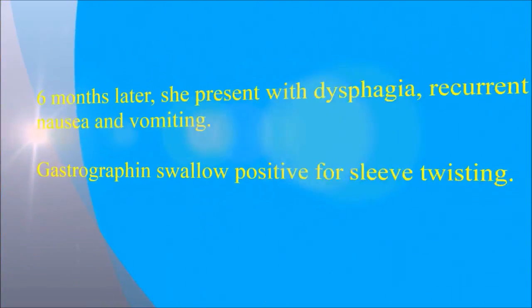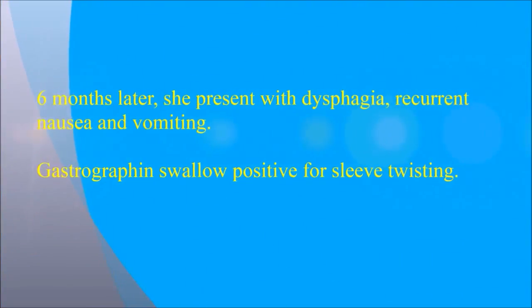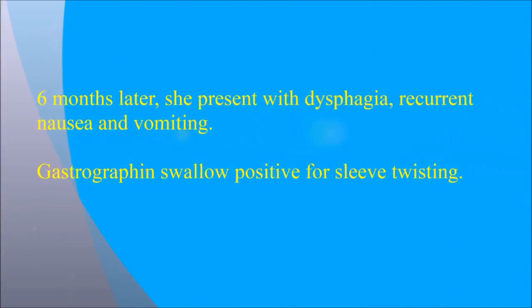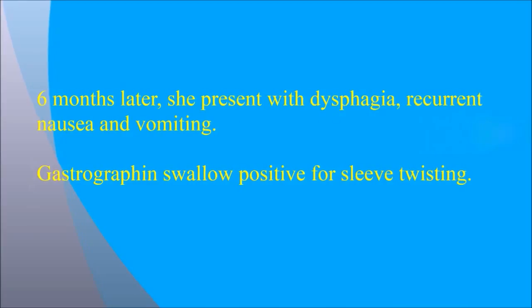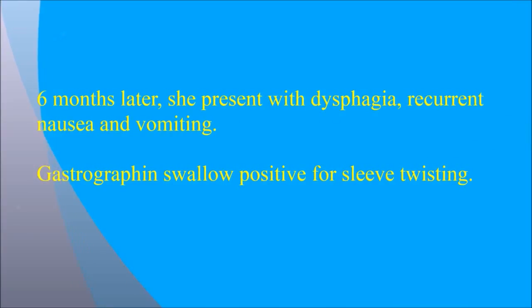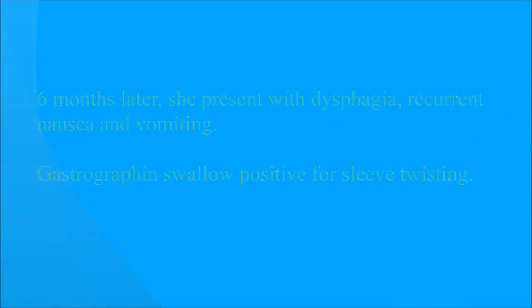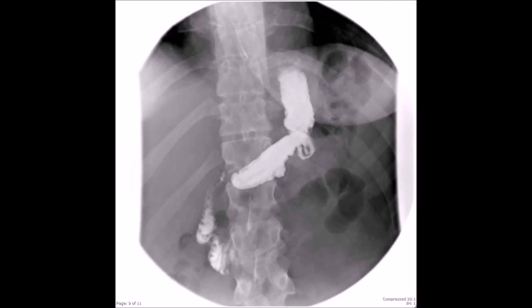Six months later, she presented with dysphagia and recurrent nausea and vomiting. A gastrografin swallow study was obtained at that time and was positive for sleeve twisting again.